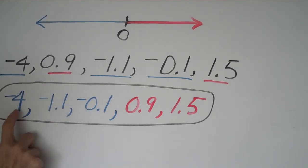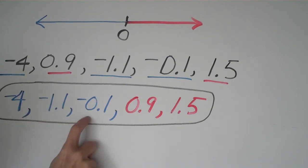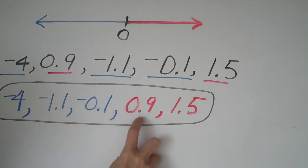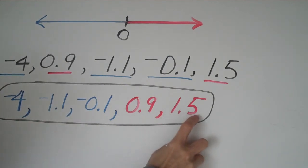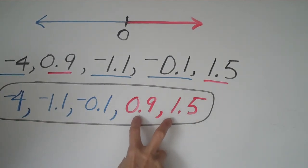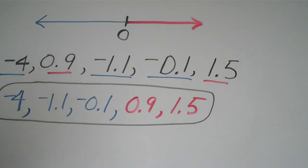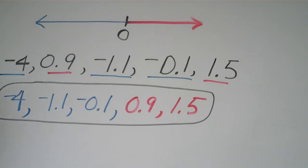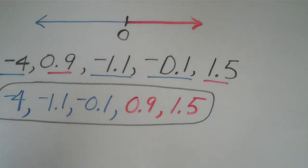It all comes down to knowing the number line and thinking logically. Remember: on the left side (negatives), the biggest-looking number is actually the smallest. On the right side (positives), order them as you normally would — think about money to help. Replay the video if you have any questions and practice.